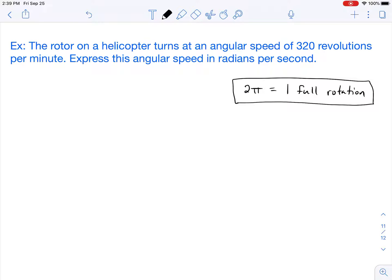So our example problem here is the rotor on a helicopter turns at an angular speed of 320 revolutions per minute. We want to express this angular speed in radians per second.